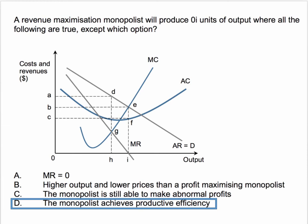Option A: the revenue maximising monopolist produces where marginal revenue is zero. So option A is correct. That's why the marginal revenue cuts the x-axis.